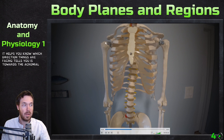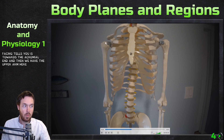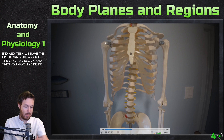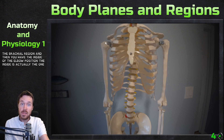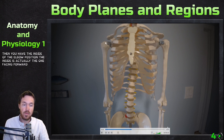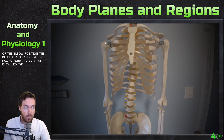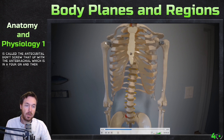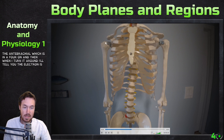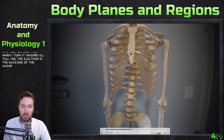Then we have the upper arm, which is the brachial region. The inside of the elbow — in anatomical position the inside is actually the one facing forward — is called the antecubital region. Don't confuse that with the antebrachial, which is the forearm. When I turn it around, the olecranon is the backside of the elbow.